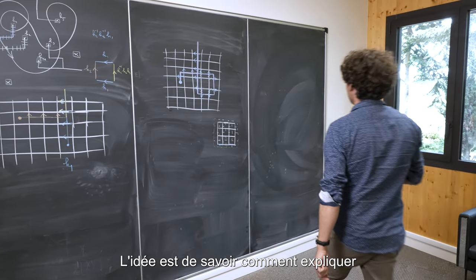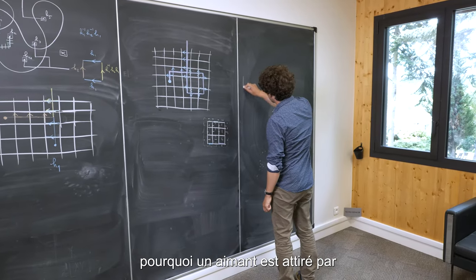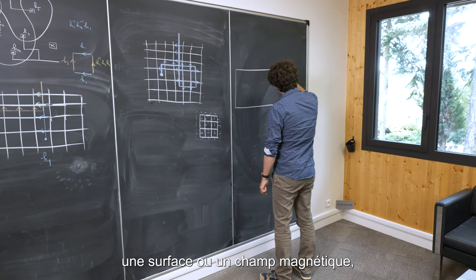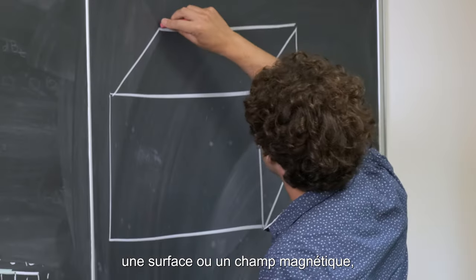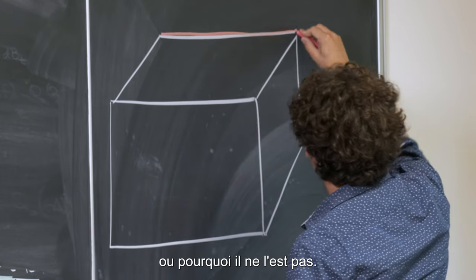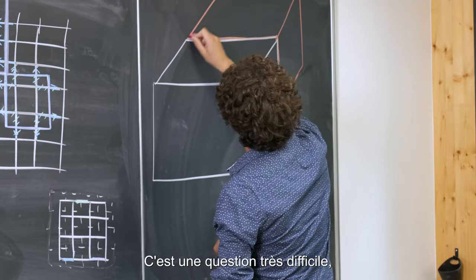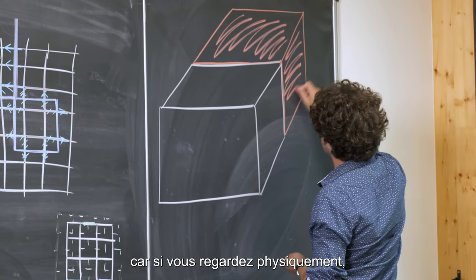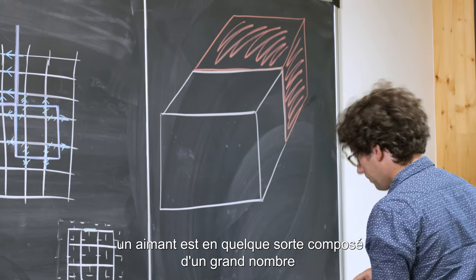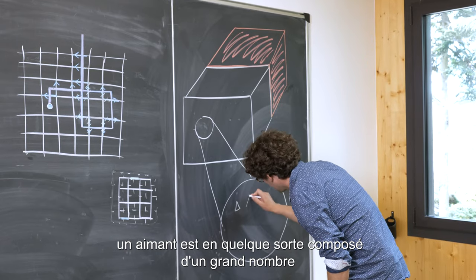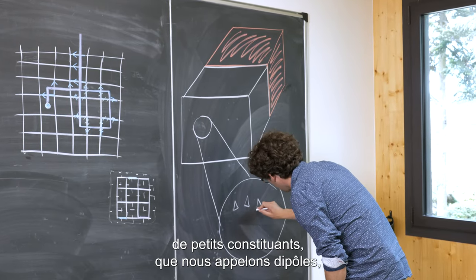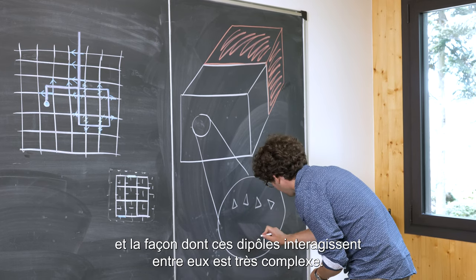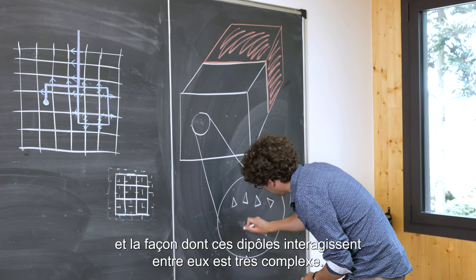The idea is how do you explain why a magnet is actually attracted by a surface or a magnetic field, or why it's not? It's a very difficult question because if you look physically, a magnet is in some sense made of a huge number of small constituents that we call dipoles. And the way these dipoles interact with each other is very complex.